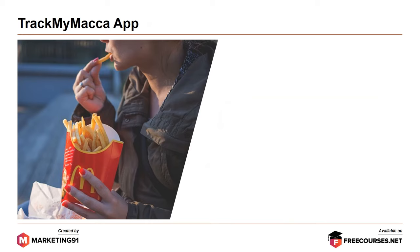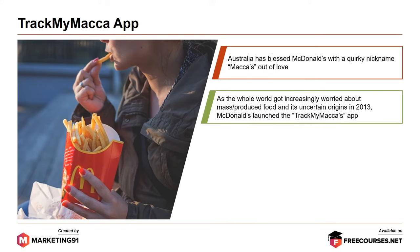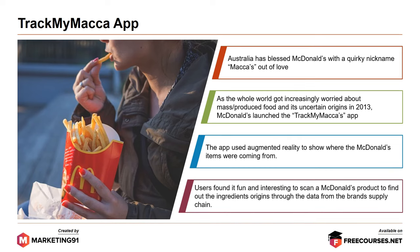Next, the TrackMy Makkah app. Australia has nicknamed McDonald's 'Makkah' out of love. As the world grew increasingly worried about mass-produced food and its origins in 2013, McDonald's Australia launched the TrackMy Makkah app. The app used augmented reality to show where McDonald's items were coming from. Users found it fun and interesting to scan a McDonald's product and find out the ingredient origins through data from the brand's supply chain.